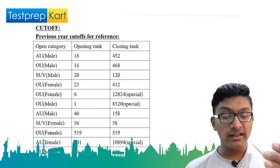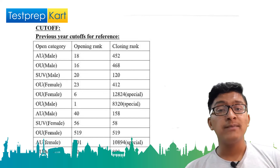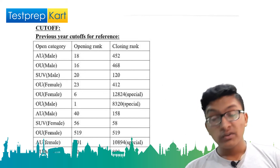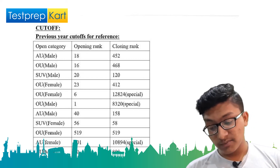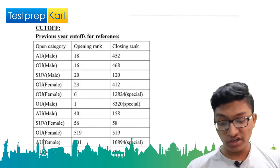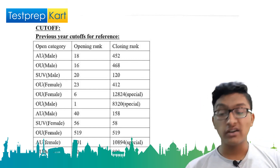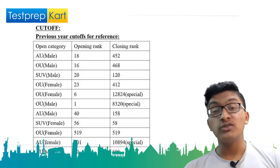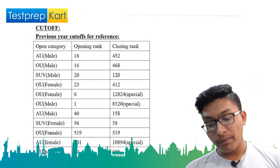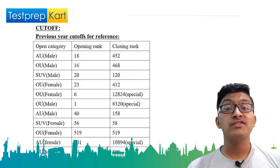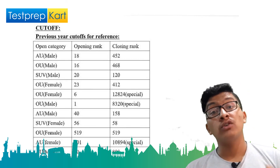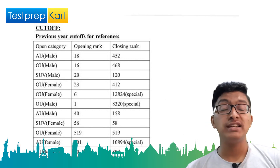At Jawaharlal Nehru Technological University, Kakinada — also one of the best universities in the state — the required ranks are: Computer Science Engineering under 1450; Electronics and Communication under 1350; Mechanical under 1700; Civil Engineering under 2100; and Petroleum Engineering under 5000. These are the cut-off ranks for the two best colleges under EAMCET examination.